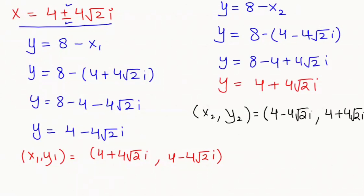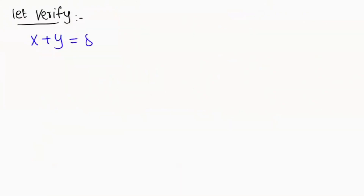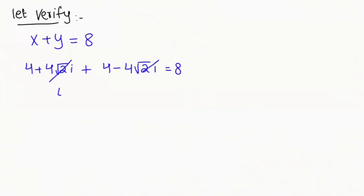Now we are going to check our answer. Taking x1 and y1 in equation 1: (4 plus 4 root 2 iota) plus (4 minus 4 root 2 iota) equals 8. The iota terms cancel, and 4 plus 4 equals 8. So the values of x1 and y1 are absolutely correct.